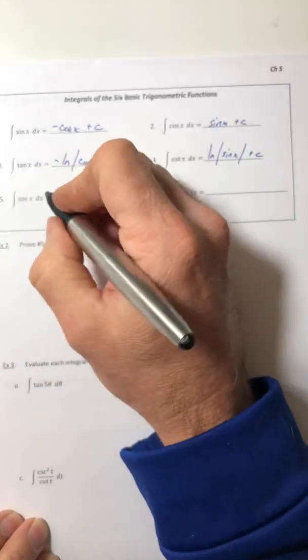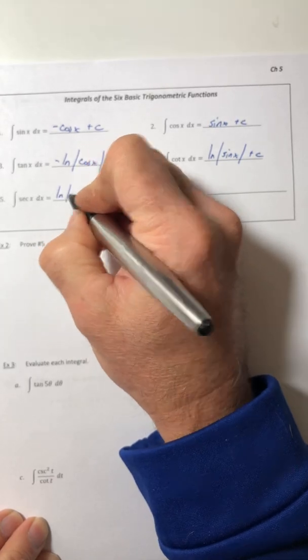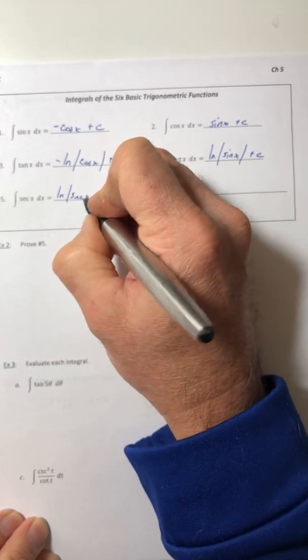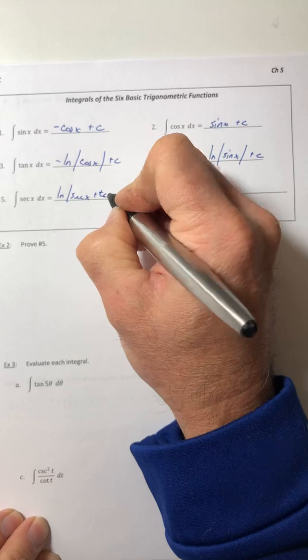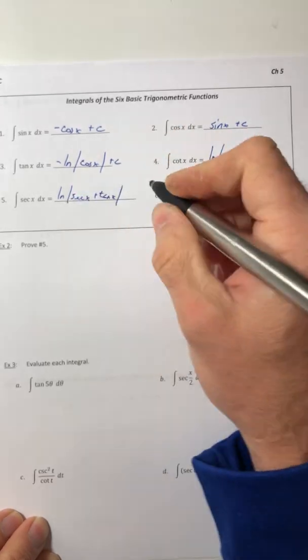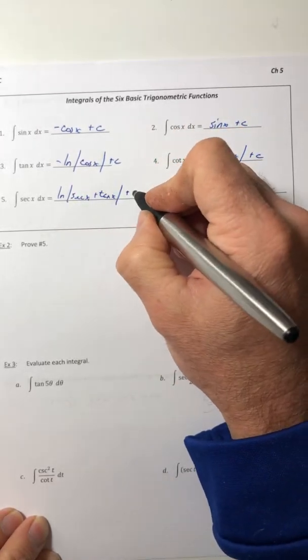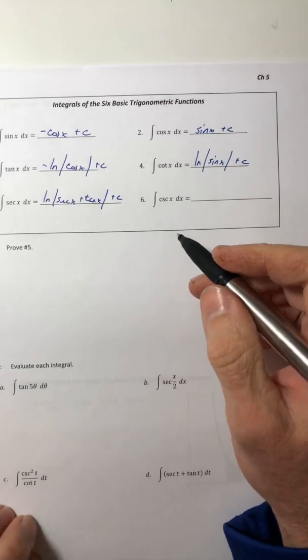Now these next two, they are a little bit more random. So the integral of secant is ln of the absolute value of secant plus tangent. It's like okay.